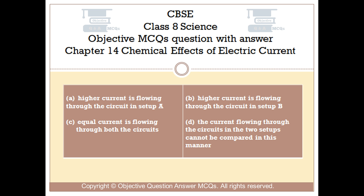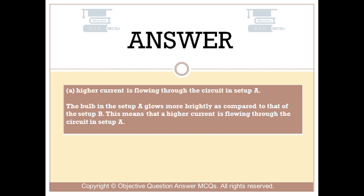The right answer is Option A — higher current is flowing through the circuit in setup A. The bulb in setup A glows more brightly as compared to that of setup B, which means that a higher current is flowing through the circuit in setup A.